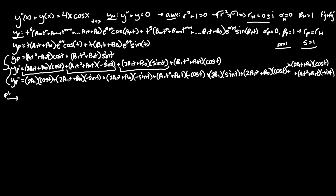Simplifying the sine terms: -b₁t² cancels with +b₁t², and -b₀t cancels with +b₀t. For cosine: -a₁t² cancels with +a₁t², and -a₀t cancels with +a₀t. The -2a₁t terms duplicate, and the -a₀ terms duplicate.